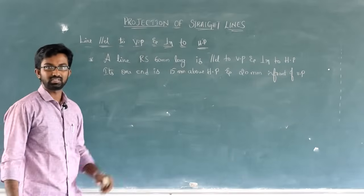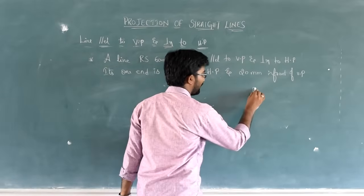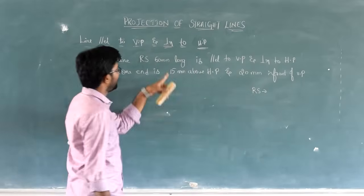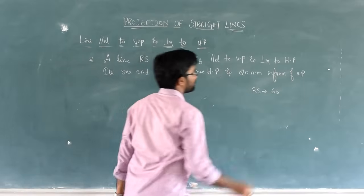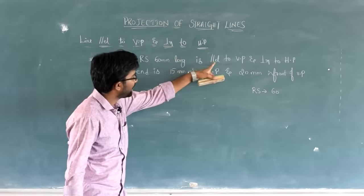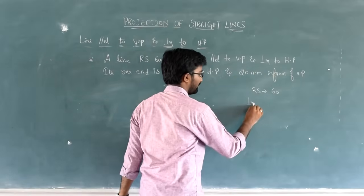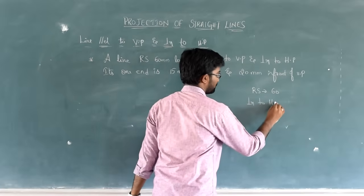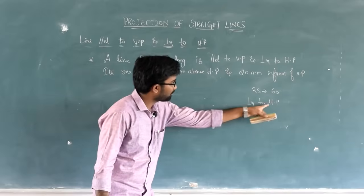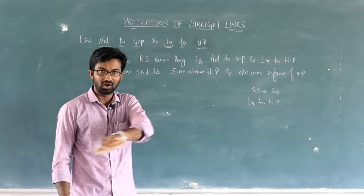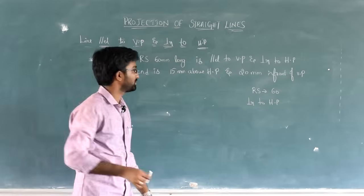So, this is our question. A line RS, length is 60 mm. Parallel to VP and perpendicular to HP. I'm writing the second portion: perpendicular to HP. So, what position should you draw? Perpendicular to HP means it pierces through horizontal plane. Like this, okay? This is the position, please remember it.